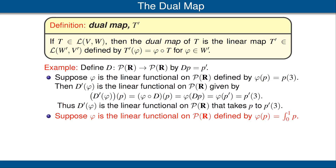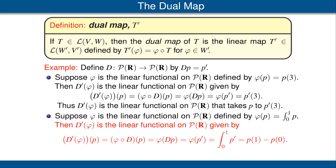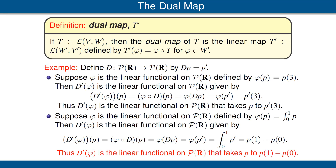Let's look at another example. We'll keep D as previously, but now choose a different linear functional φ defined by φ(p) equals the integral from 0 to 1 of p. Again, D′(φ) should be a linear functional on P(R). We see what it does to a polynomial p: D′(φ)(p) equals φ∘D applied to p, which equals φ(D(p)), which equals φ(p′), which equals the integral from 0 to 1 of p′. By the fundamental theorem of calculus, that equals p(1) minus p(0). Thus D′(φ) is the linear functional that takes p to p(1) minus p(0).